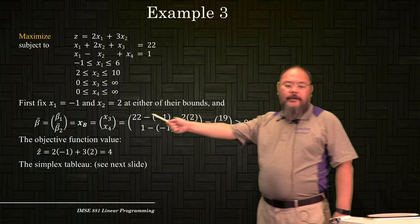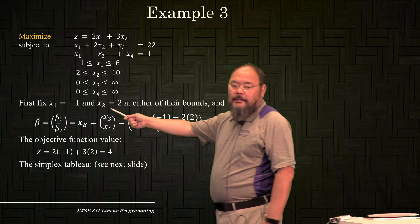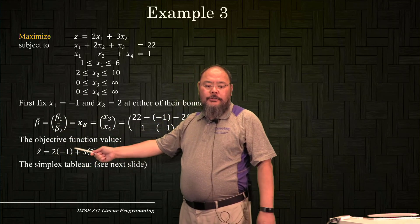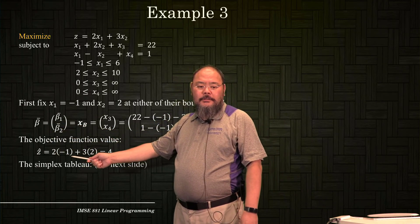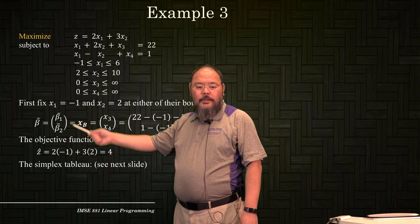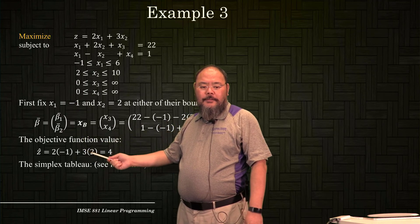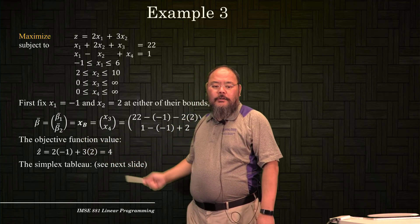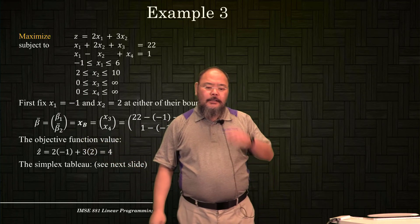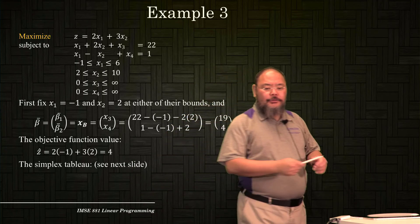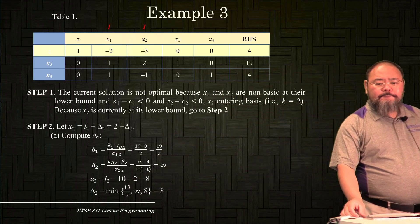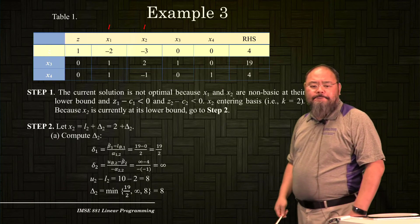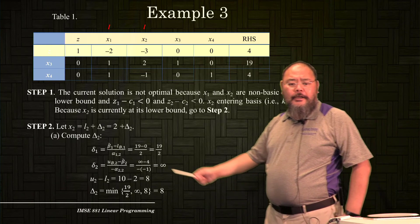The initial objective function value is 2 times (-1) plus 3 times 2, which equals 4. That's the initial tableau to begin with.